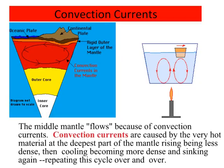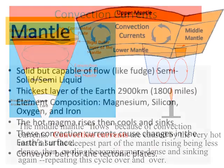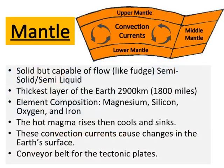The middle mantle flows because of convection currents. Convection currents are caused by the very hot material at the deepest part of the mantle rising — being less dense — then cooling, becoming more dense, and sinking again, repeating this cycle over and over. The movement of the lithospheric plates and the convection currents will be covered more in depth during the next essential question.